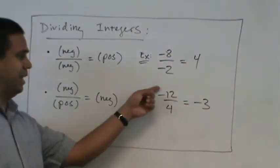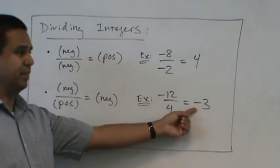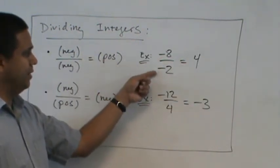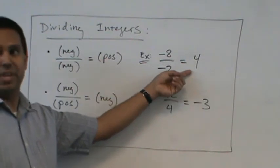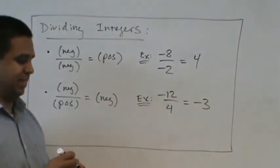So when you have a negative divided by positive, it's negative. If you have two negatives, you divide them, it makes it a positive. Notice it's the same rules for multiplication.